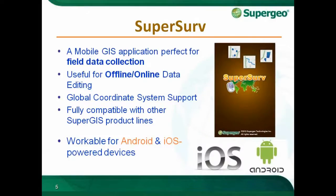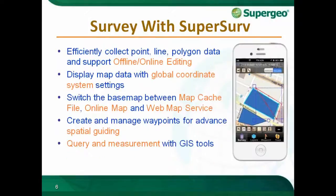SuperServe is the Mobile GIS application, perfect for field data collection. It supports offline and online data editing, all global coding systems, and is fully compatible with other SuperG products, working on both Android and iOS devices. Using SuperServe, you can efficiently collect point, line, and polygon data, display map data with global coordinate system settings, switch base maps between map cache files, online maps, and web map services. It also allows you to create and manage waypoints for advanced spatial guiding, and on-screen query and measurement with GIS tools.